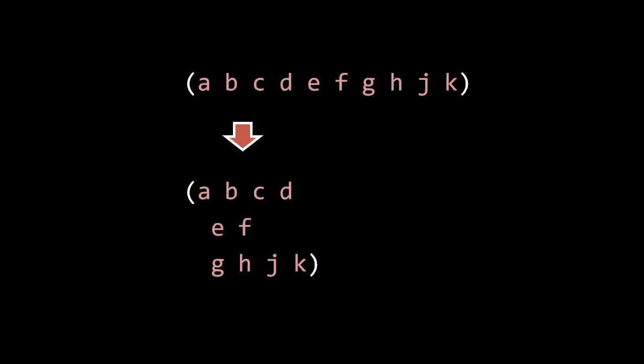Let's take an easy case and say we have a list that has a whole bunch of arguments and we want to spread it onto multiple lines. When we do this we simply indent underneath the opening parentheses, and the standard Lisp style is to indent by just two spaces. Which arguments we choose to group together on individual lines is up to us — that's a matter of style.